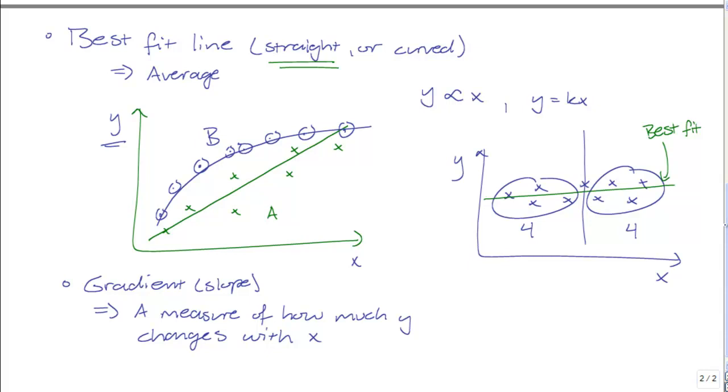The gradient or slope is also a measure of how steep the graph is. If you have two graphs, graph A and graph B, where graph A is noticeably shallower than graph B, then graph B is physically steeper. There's a much larger change in y as opposed to x when you look at graph B compared to graph A. Graph B would then have a larger gradient.